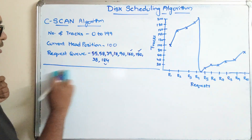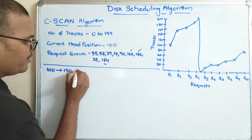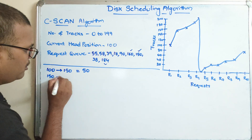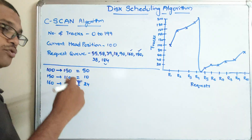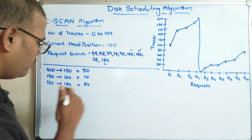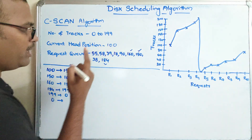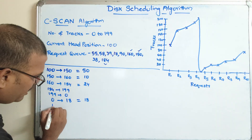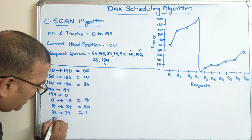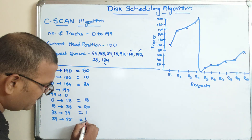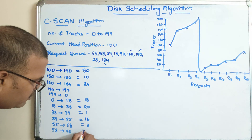Now we can calculate the seek time. Starting at 100, the next is 150, which is 50. Then 150 to 160 is 10. Then 160 to 184 is 24. Then 184 to 199, and then 199 to 0 directly. From 0 to 18 is 18. Then 18 to 38 is 20. Then 38 to 39 is 1. Then 39 to 55 is 16. Then 55 to 58 is 3. And 58 to 90 is 32.